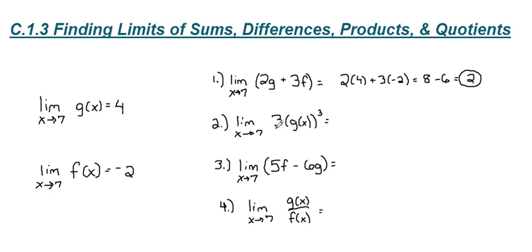For number 2, we're raising g to a power. We're taking g times itself 3 times. So 3 will carry through, and the value of g as we approach 7 is 4, as we pointed out earlier. We take 4 cubed to get 64. 64 times 3 is 192.